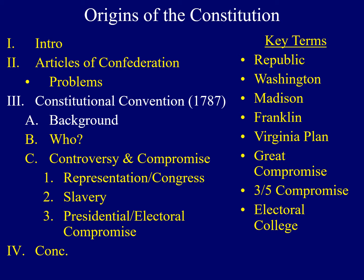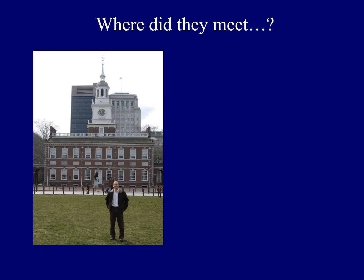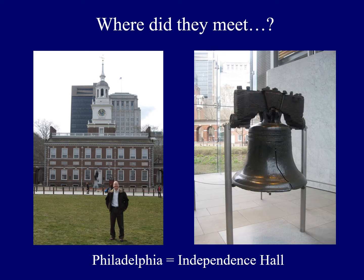Do you know where they met for the Constitutional Convention? It was in the nation's largest city, Philadelphia. The name of the building was Independence Hall, shown here in the image.